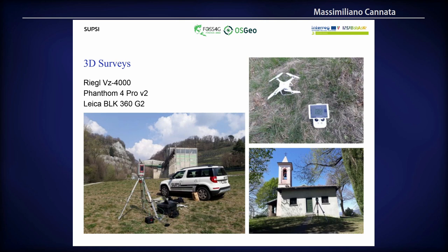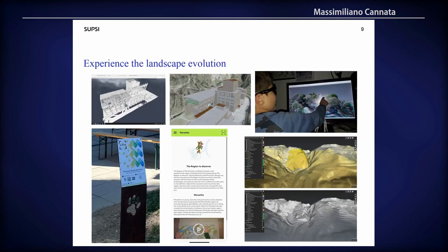For the 3D survey we used the RIEGL VZ-4000, a laser scanner that can survey up to four kilometers distance, along with the Phantom 4 Pro V2 and the Leica BLK. We concentrated on two areas: the Saccabeca Valley in the Parco del Gola della Breggia, and the Oratorio di Santo Stefano in the Parco delle Gole della Breggia. One area is related to excavation in an urban park.